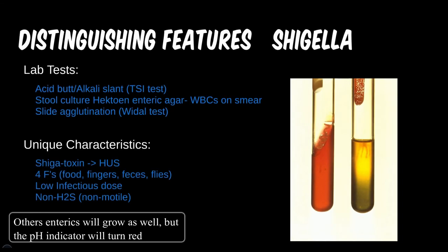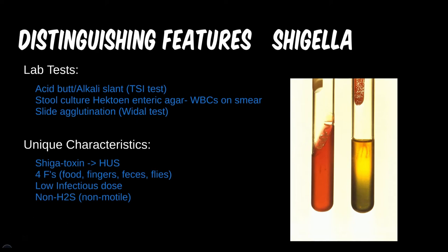The Shiga toxin has been covered and its virulence factor is associated with HUS. Shigella often uses the 4Fs mnemonic for its most likely causes: food, fingers, feces, and flies. This is somewhat different from the meat-specific foods we see in Salmonella, though there is some overlap. As it also has a very low infectious dose compared to many other microbes, it only takes a few individual bacteria to colonize a host.